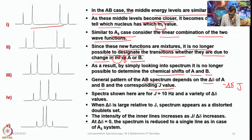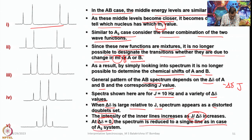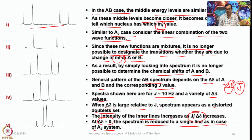The spectra shown here are for J equals 10 Hz and a variety of delta-delta values. In all of them, the coupling constant is kept at 10 and different delta-delta values are given. When delta-delta is very large relative to J, the spectrum appears as a distorted doublet. The intensity of the inner lines increases as J/delta-delta increases. At delta-delta equals zero, the spectrum is reduced to a single line, as in the case of the A₂ system.